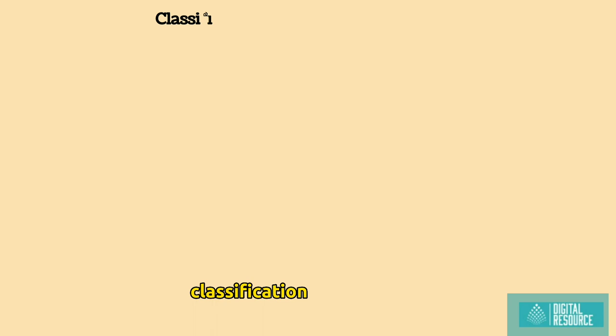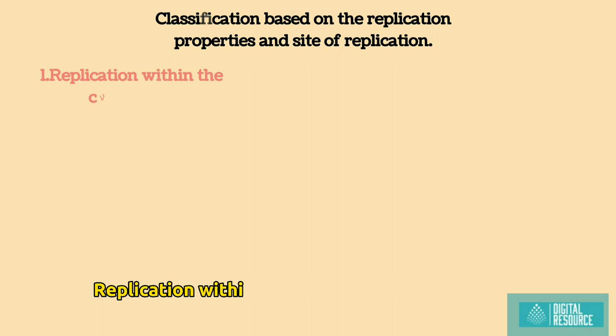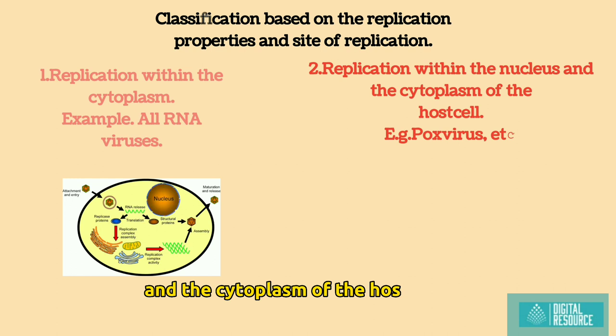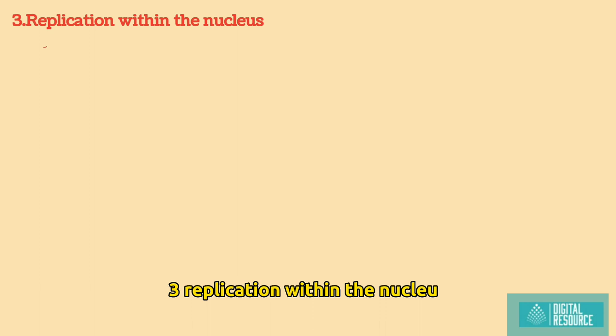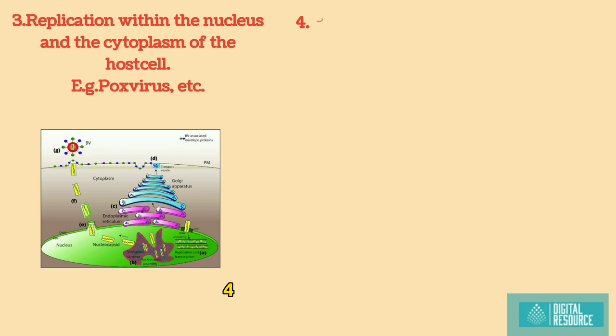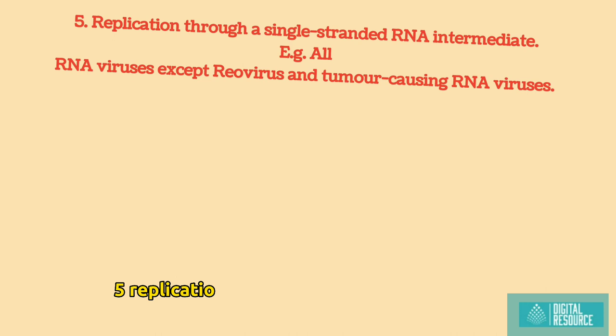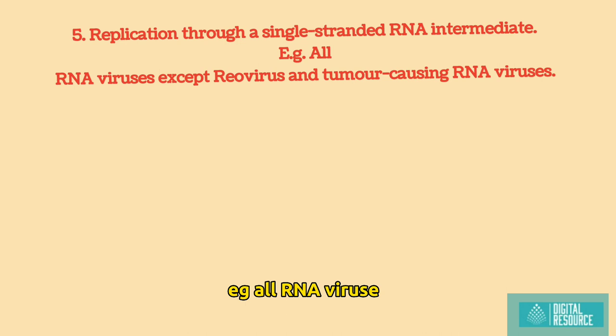Classification based on the replication properties and site of replication. 1. Replication within the cytoplasm of the host cell, example: all RNA viruses except the influenza virus. 2. Replication within the nucleus and the cytoplasm of the host cell, e.g. poxvirus. 4. Replication of the virus through the double-stranded DNA intermediate, e.g. all DNA viruses, retrovirus and some tumor-causing RNA. 5. Replication through a single-stranded RNA intermediate, e.g. all RNA viruses except reovirus and tumor-causing RNA viruses.